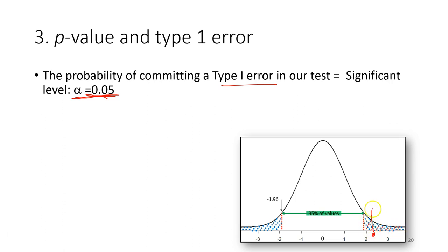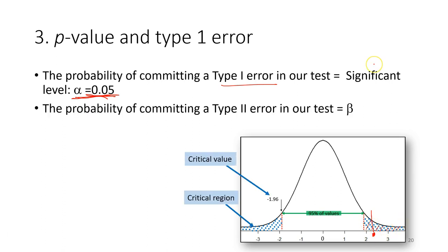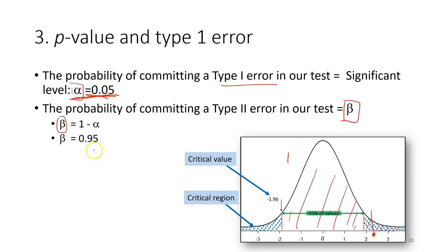The Type 2 error probability is called beta. Since the total probability of the distribution is 1, beta equals 1 minus alpha, which is 1 minus 0.05 = 0.95. So beta is 0.95 in this case.